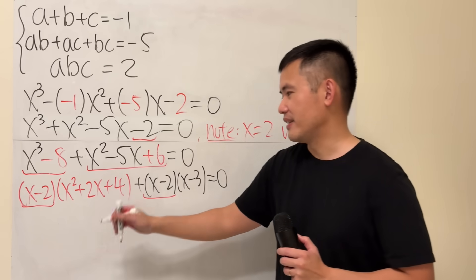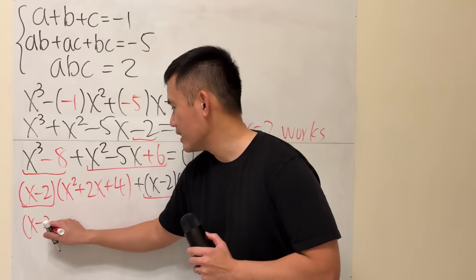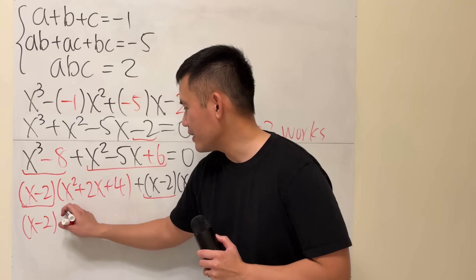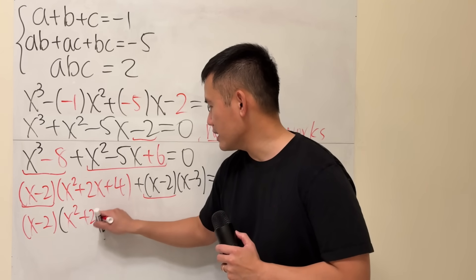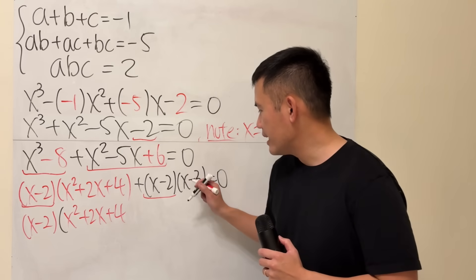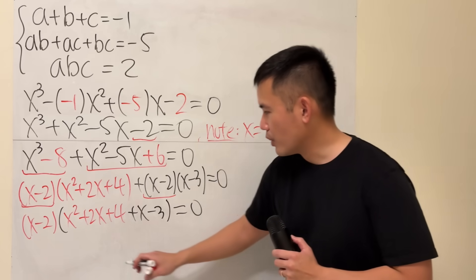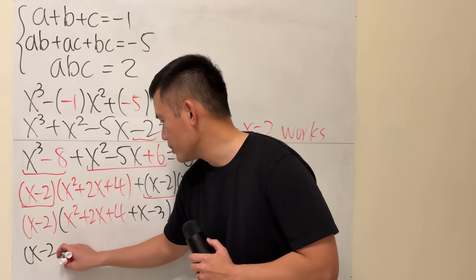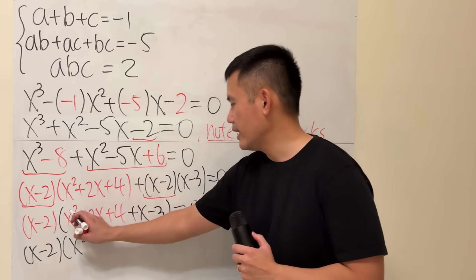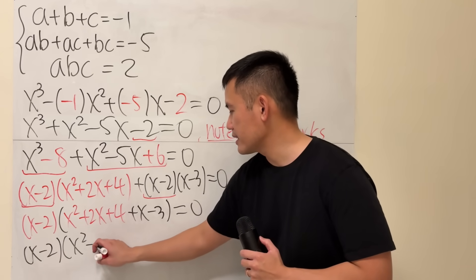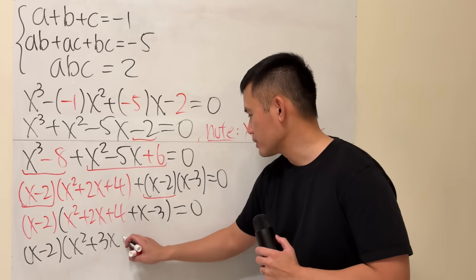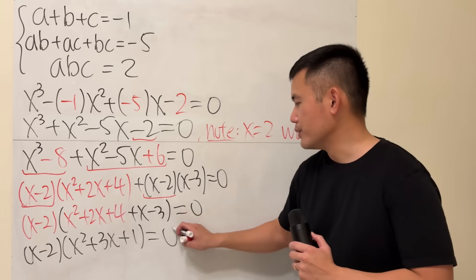And then we will just have X squared plus 2X plus 4, and then combine with X minus 3. So we are looking at X minus 2 times the quadratic, X squared plus 3X plus 1, it's equal to 0.